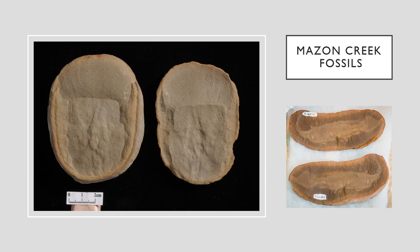As far as ichnofacies go, there are several notable trace fossils that get preserved in deltaic environments. For instance, there is often burrowing and bioturbation in the sediment of deltas because the water moves relatively slowly and it's easy for animals to live there.